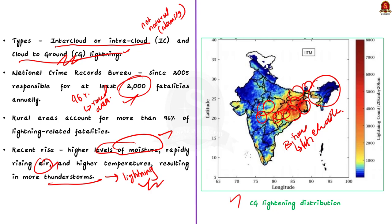In this discussion, we saw some points about the formation of lightning and thunder, the reason for the increase in lightning disasters in recent times, and the geographical distribution of lightning disasters in our country. With this, let us conclude this discussion and take up the next news article.